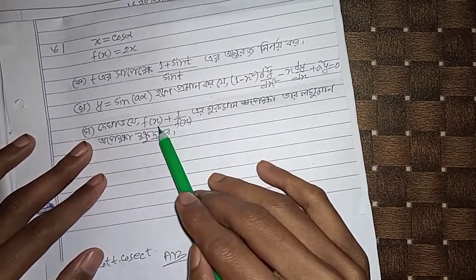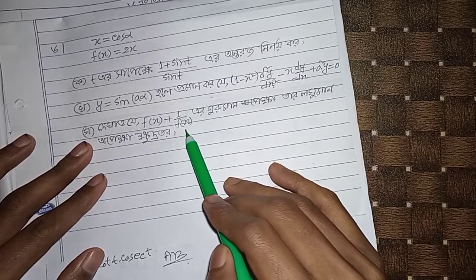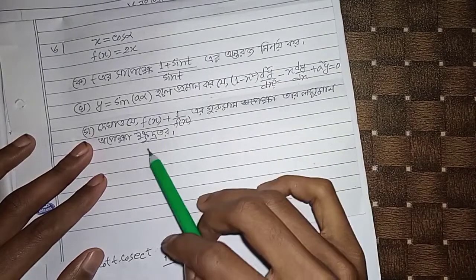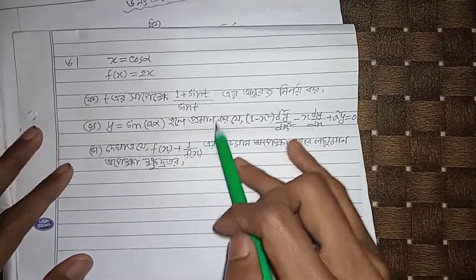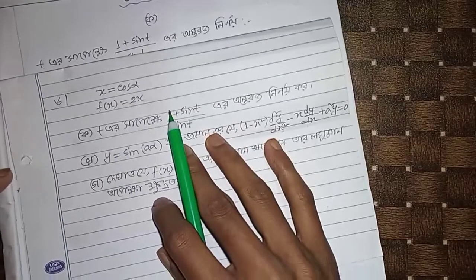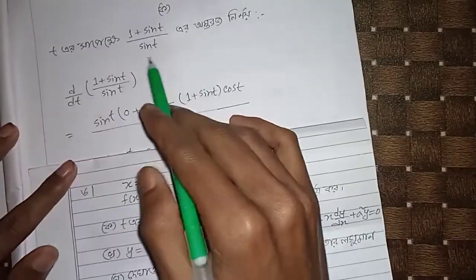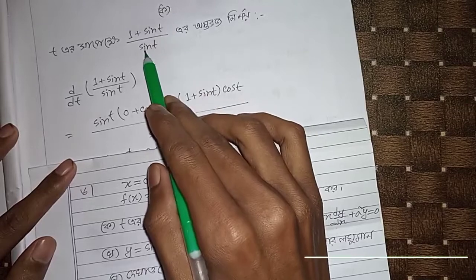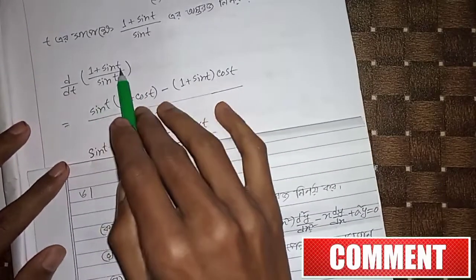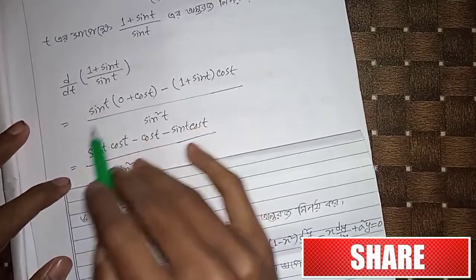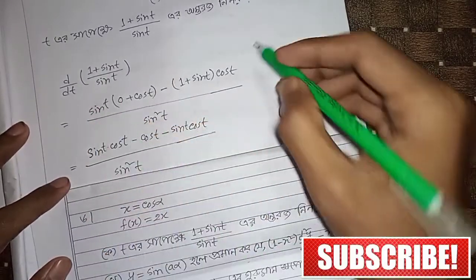Because f(x) plus one by f(x), we draw this as a formula to create the derivative. We use one plus sin t divided by sin t to get one plus the result.